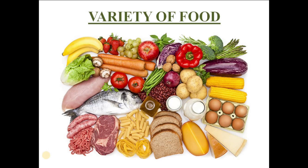Different regions of the world have various kinds of eating habits. These eating habits are based on the availability of food in that particular region. For example, in coastal regions like Goa, we get plenty of seafood like fish, crabs, and prawns. So fish curry rice becomes the staple food of Goa. Also, the climatic condition of a region affects eating habits. Goa has a hot and humid climate, which is a favorable condition for the growth of coconut plants.